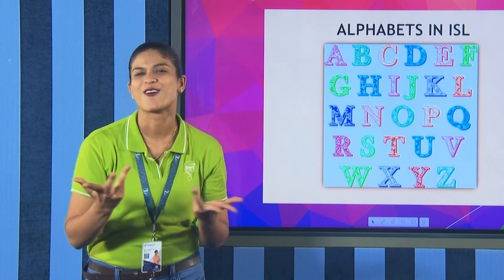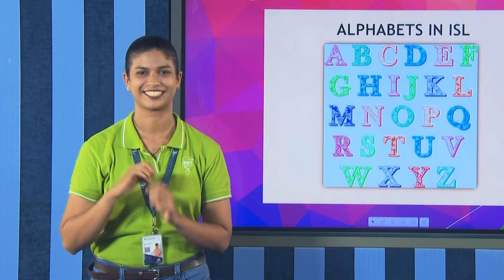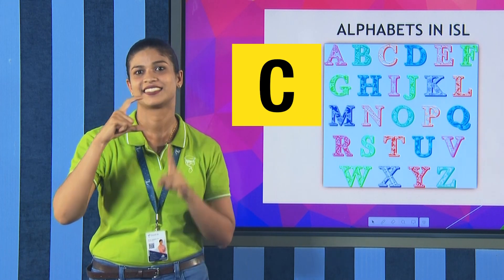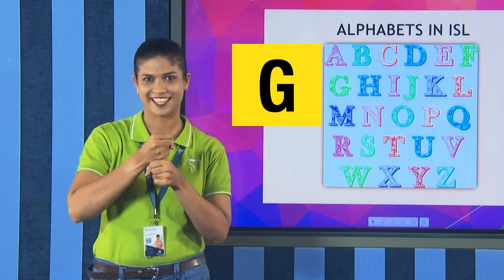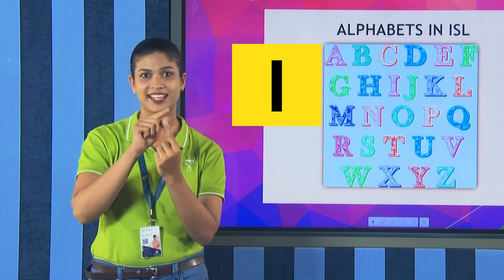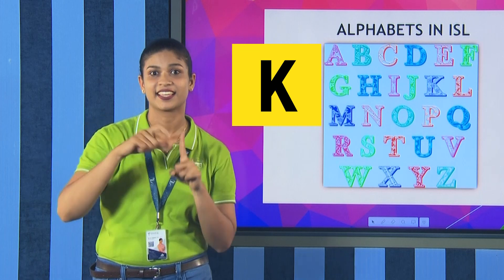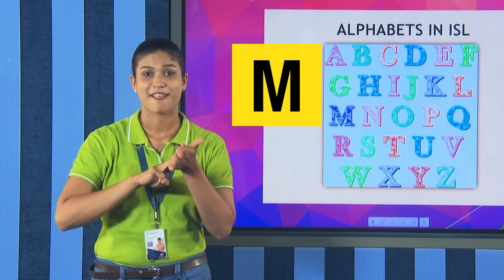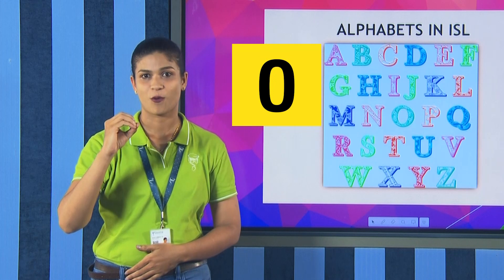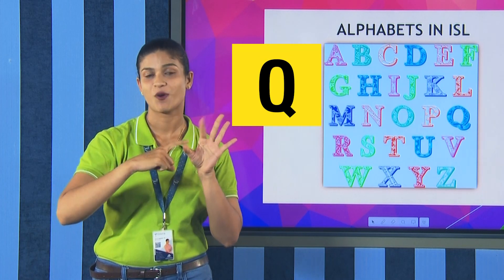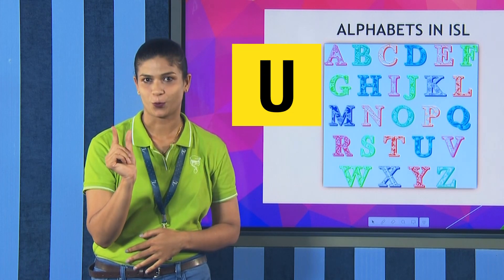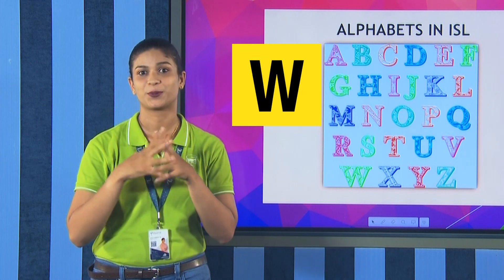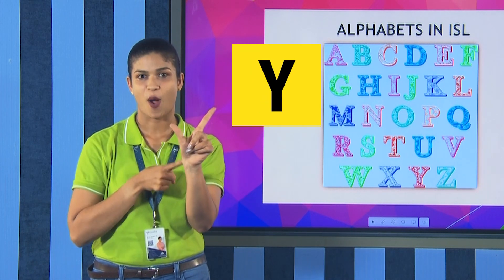Now we are going to learn English alphabets in ISL. A, B, C, D, E, F, G, H, I, J, K, L, M, N, O, P, Q, R, S, T, U, V, W, X, Y, Z.